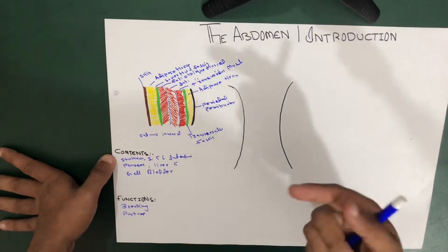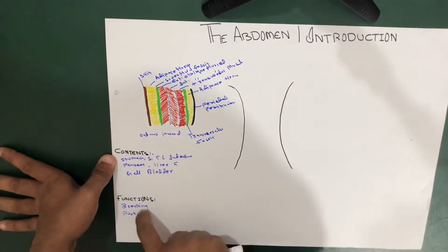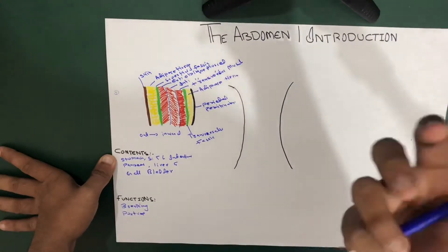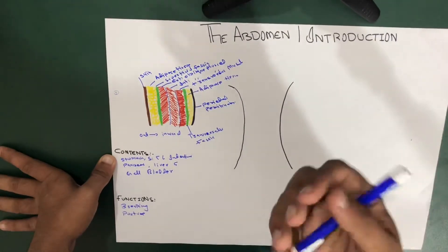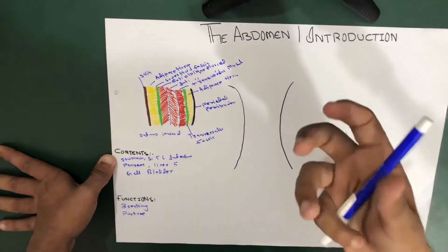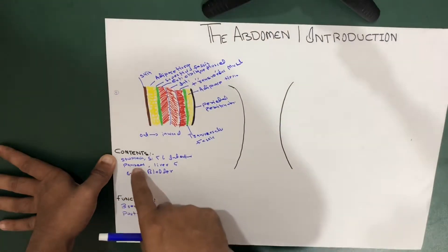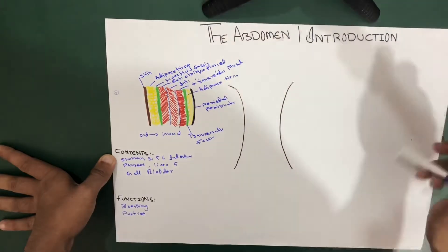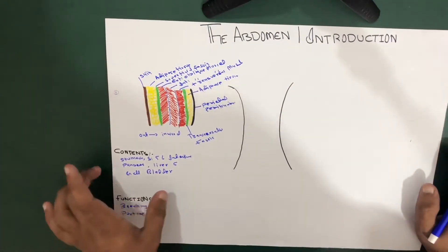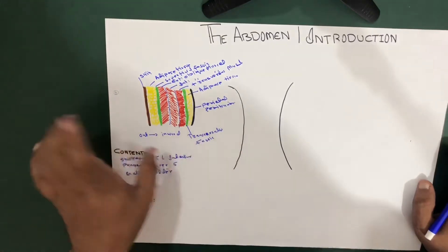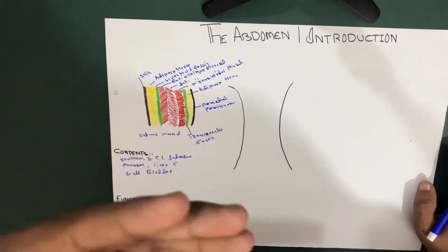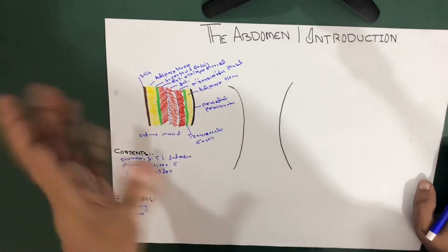Now let's talk about the functions. In the abdominal region, most of the digestion occurs because the stomach, liver, gallbladder, and pancreas are all present here, releasing enzymes and hormonal enzymes. So the abdomen is the place where most of the digestion occurs.